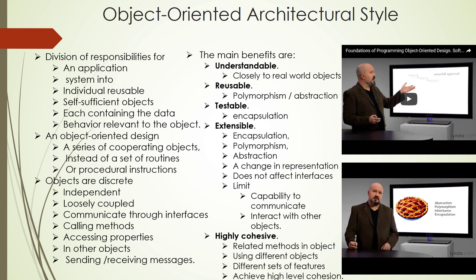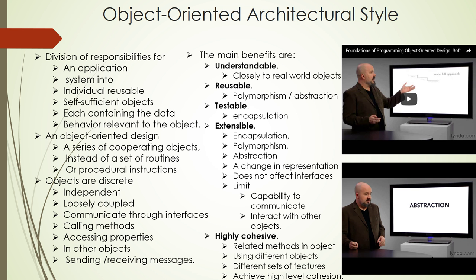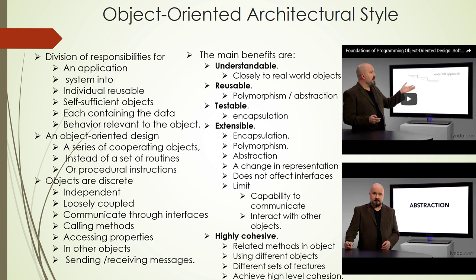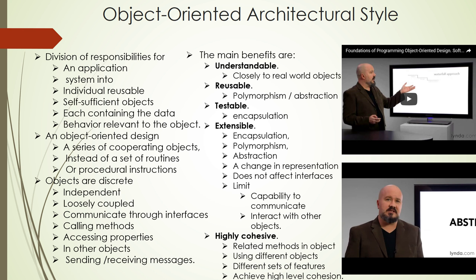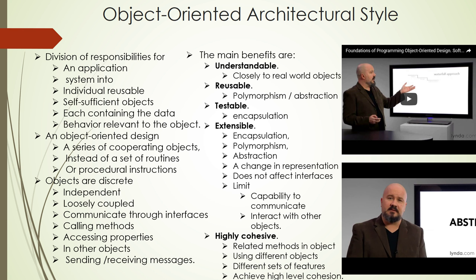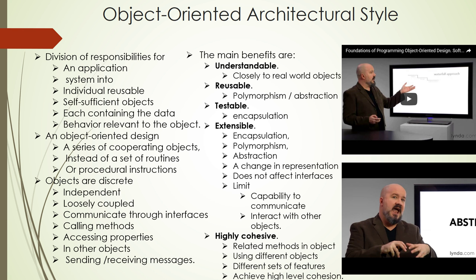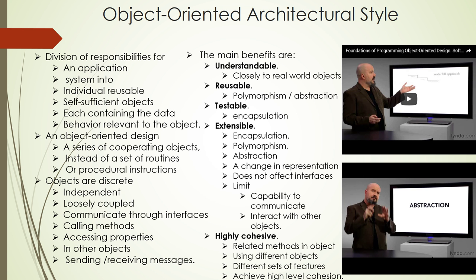Let me prove that with the first one: abstraction. If I say 'table,' you know what I mean. I didn't specify whether it was a wooden table or a glass-top table, whether it had four legs or one central pillar, whether it was large or small. You might have an image in mind — that's okay — but I don't have to get that specific because you understand the idea of a table: the abstraction of a table.